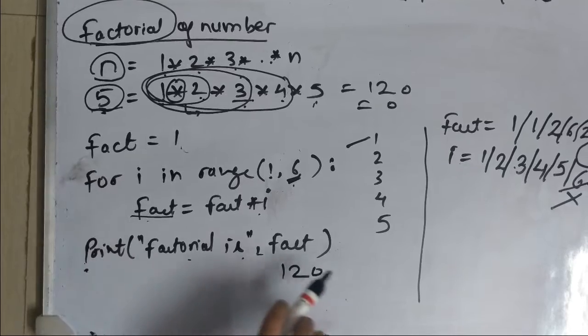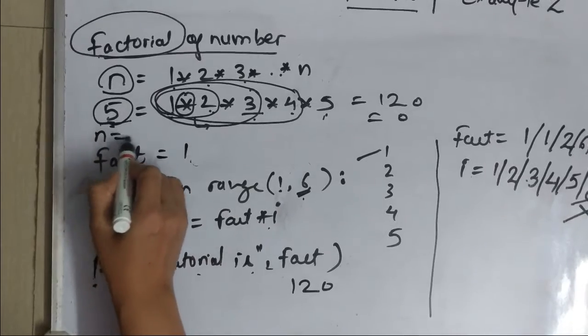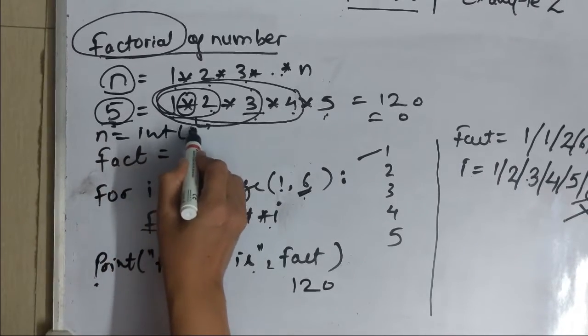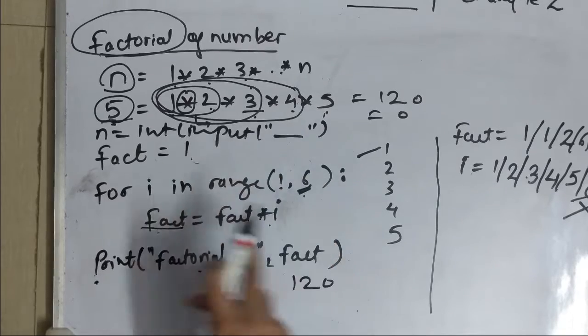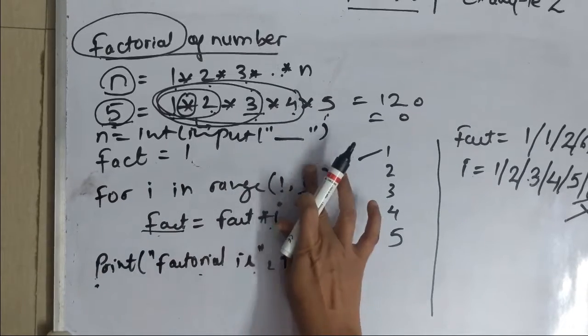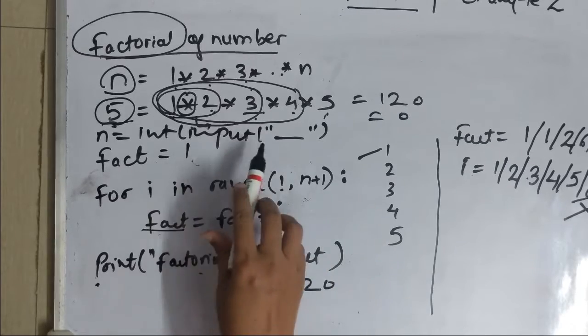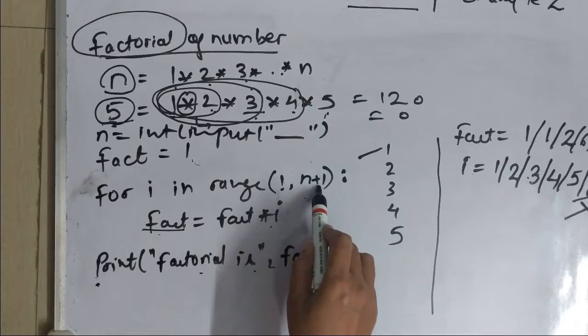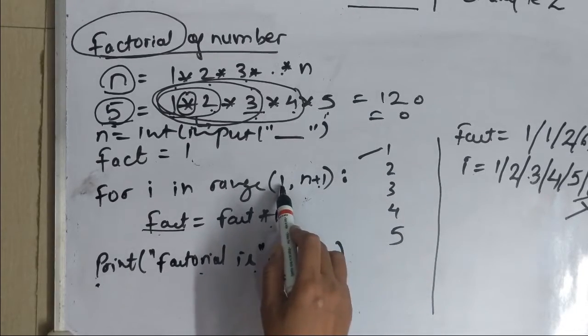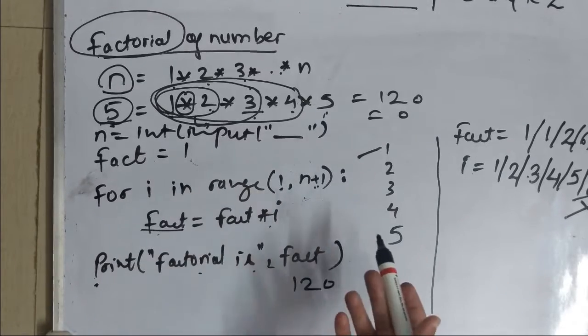Suppose I want to find out factorial of any number entered by user. In that case what I will do is I will input a number. You can write enter a number over here and after this instead of 6 I will write n plus 1. So suppose I have entered the number as 10 the loop will execute from 1 to 11 that means 11 minus 1, it will execute from 1 to 10. This is how you can find factorial of any number entered by user.